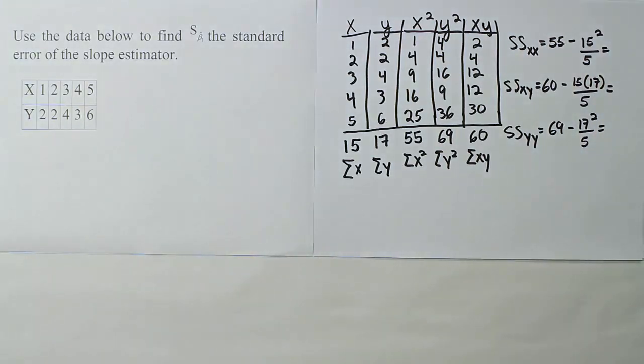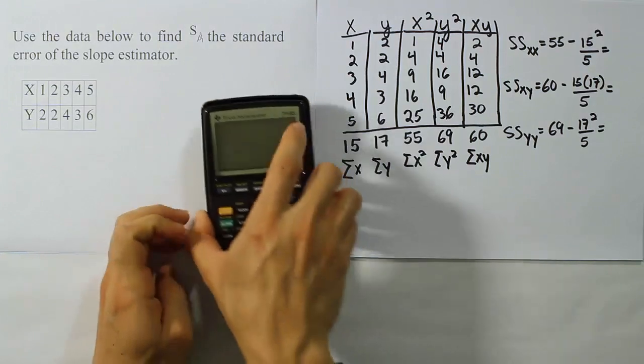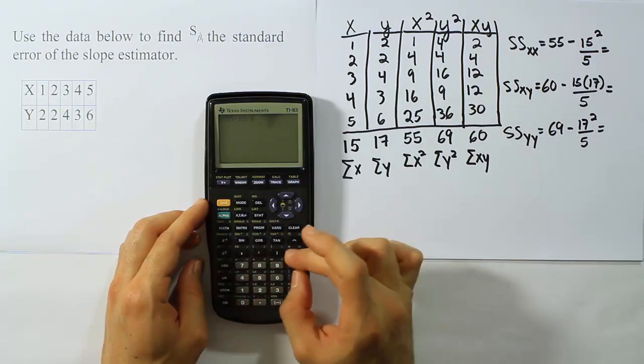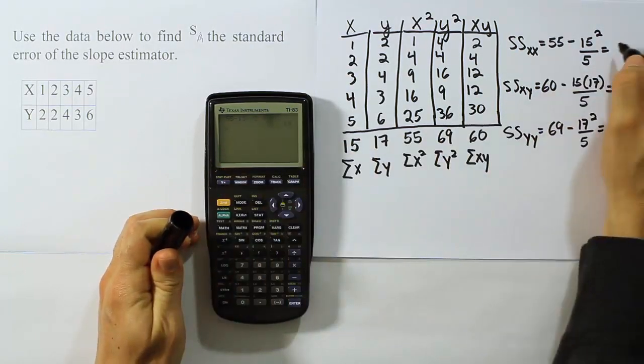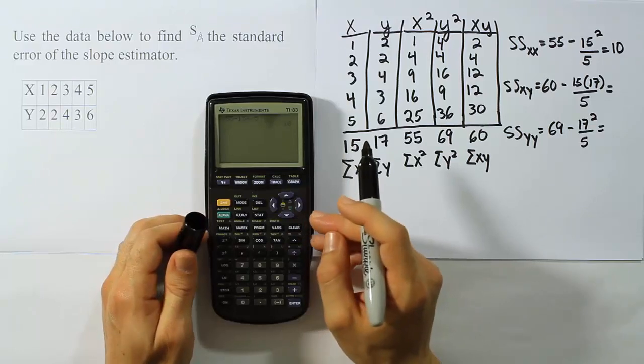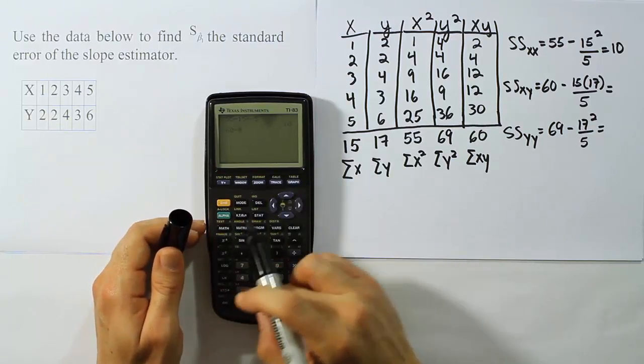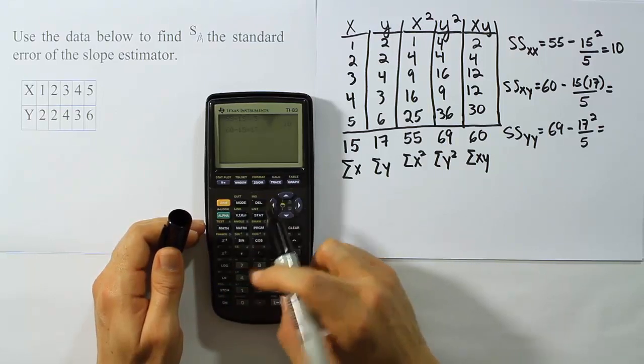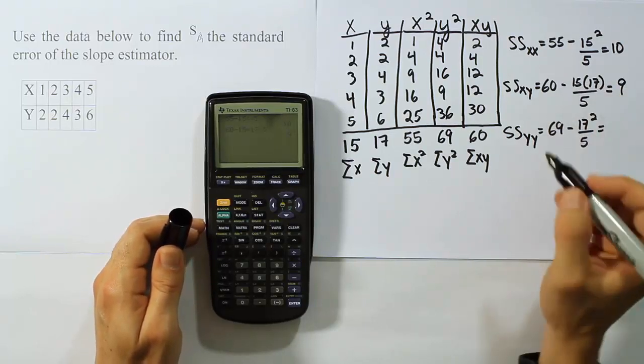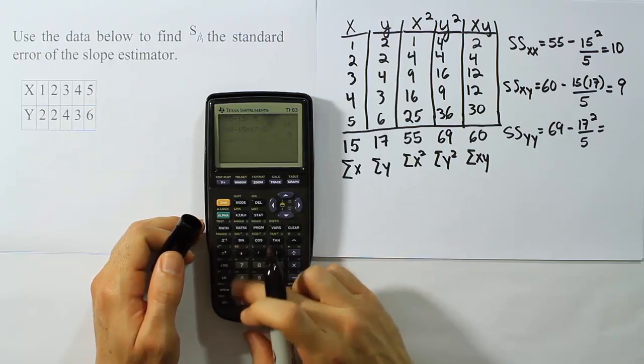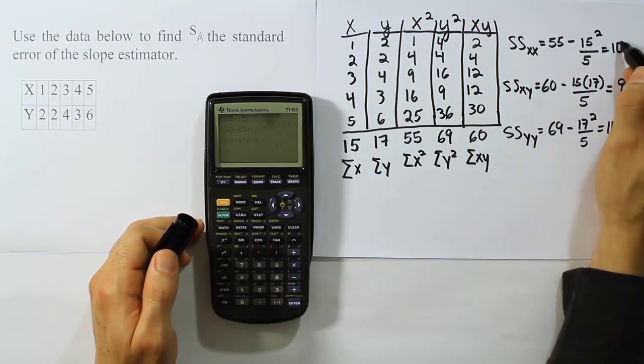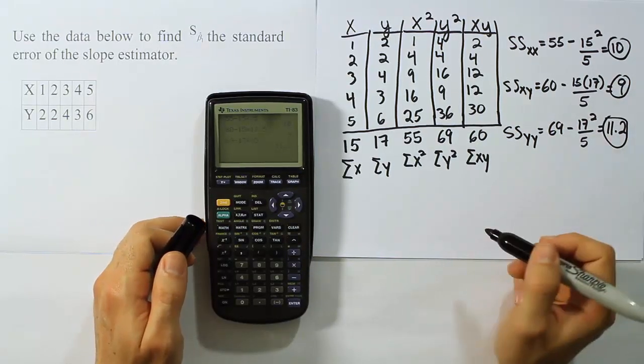So let's work those out with a calculator and see what they give us. Starting with the first one, it's 55 minus 15 squared, divided by 5. We'll give the answer 10 for that one. We could have done some of these in our head because 225 divided by 5 minus 55 would have given us that same answer. Then 60 minus 15 times 17 divided by 5. In this case, we get 9. That would be the same as doing 3 times 17, or 51, minus 60, which gives us 9. And then 69 minus 17 squared divided by 5, and it gives us the answer 11.2.